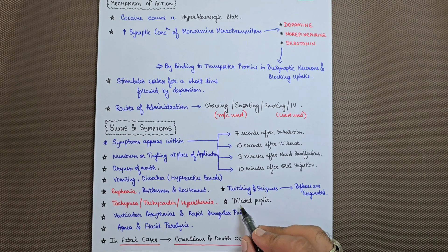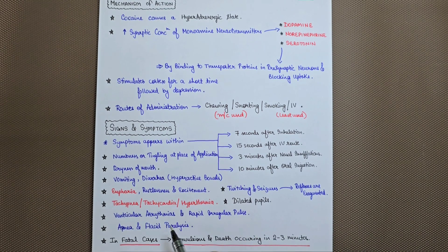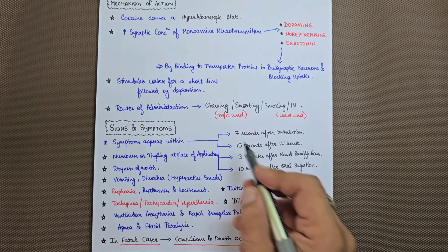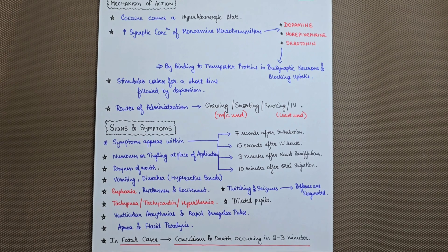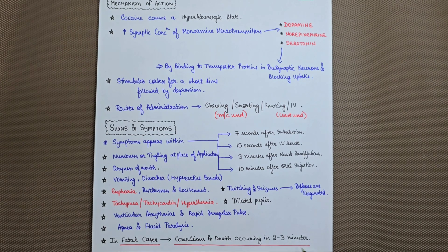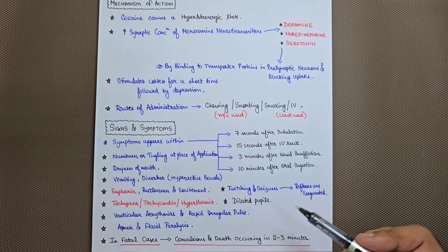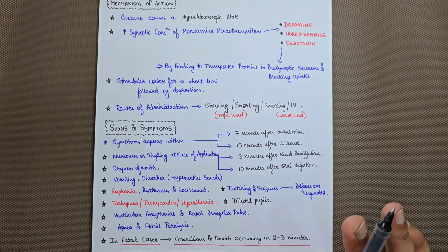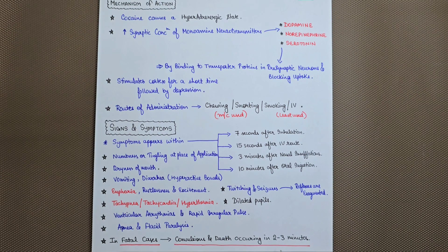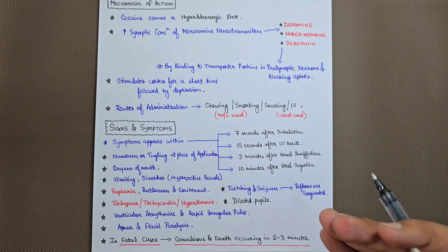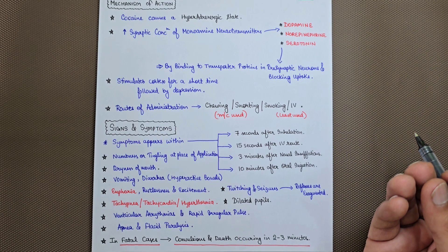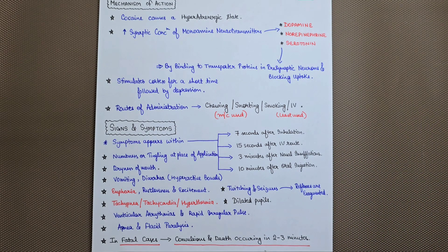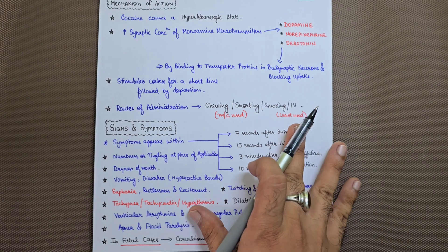The patient will have dilated pupils. Ventricular arrhythmias and rapid irregular pulse are also seen, followed by apnea and flaccid paralysis. In fatal cases, convulsion and death occur within 2 to 3 minutes. It is a very highly toxic substance where death can occur so quickly that even after consuming a large amount, the patient may not reach the hospital. These are the main signs and symptoms related to cocaine poisoning.